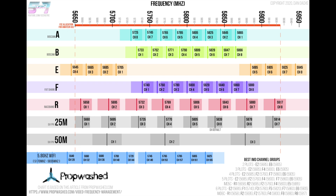Originally I thought it was going to use combined channels one and two together to make this new channel, but you can see it's using a much wider version of channel two, a much wider version of channel four, and a wider version of channel six. Now that you can see these laid out visually on this chart, you can use that information to help plan when flying with other people to make sure you're not creating extra interference for them.